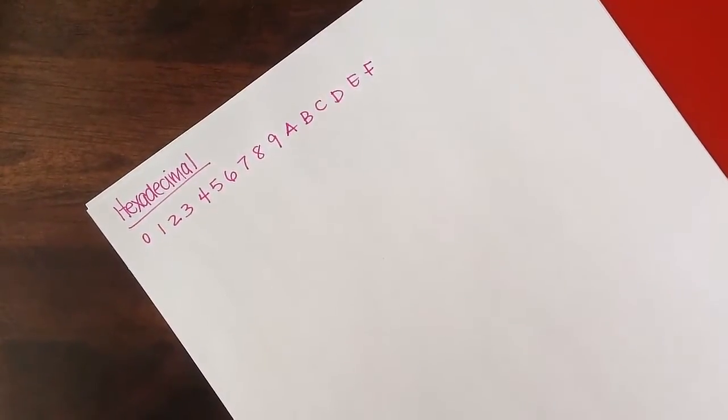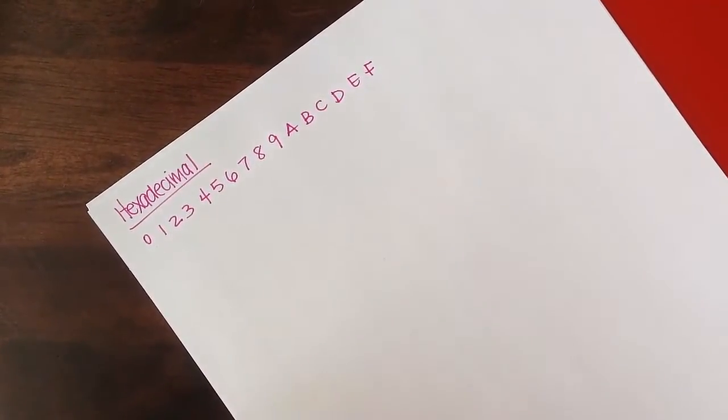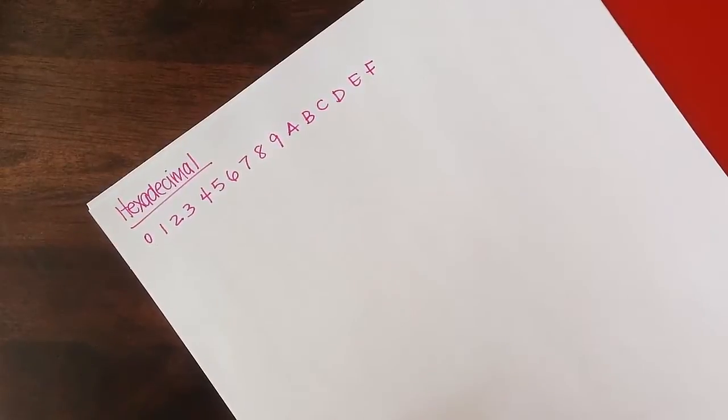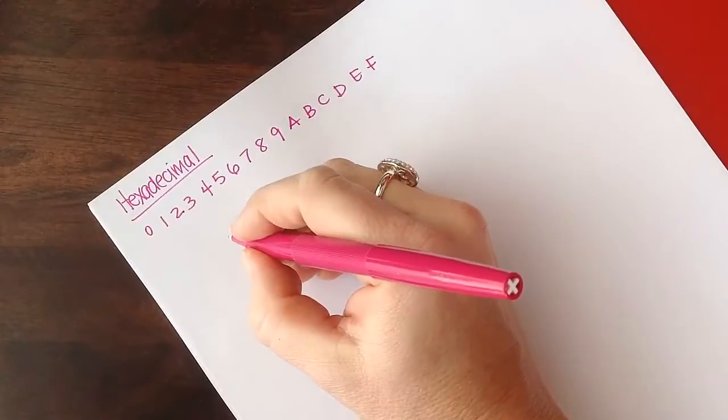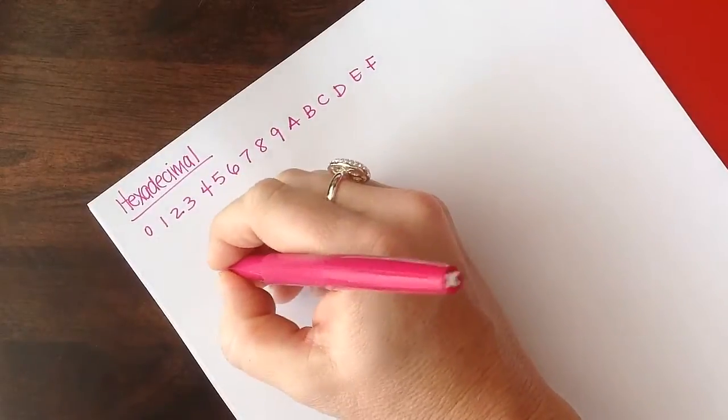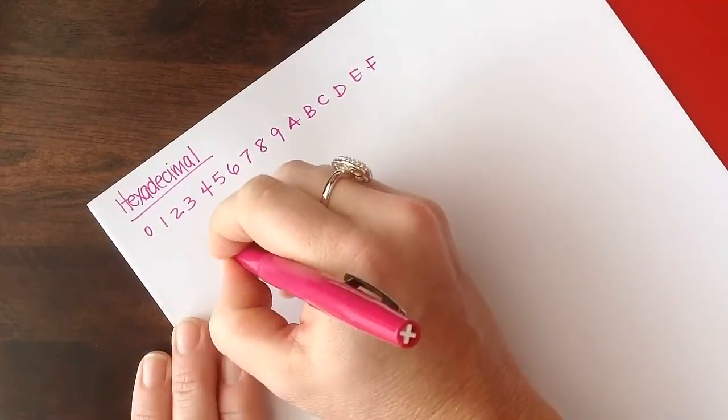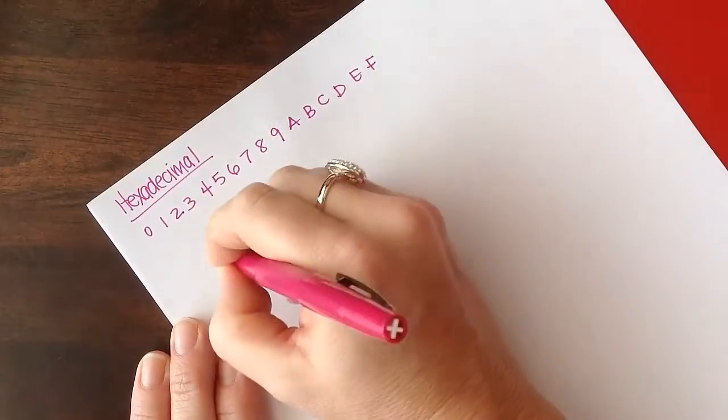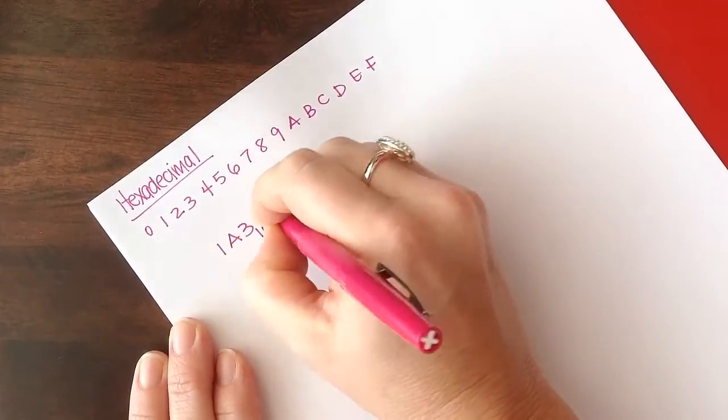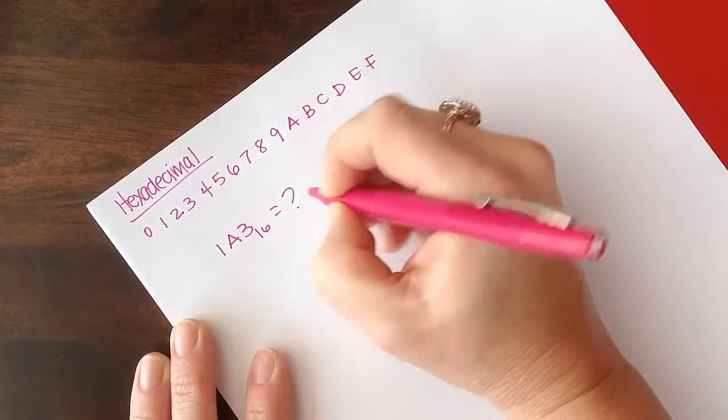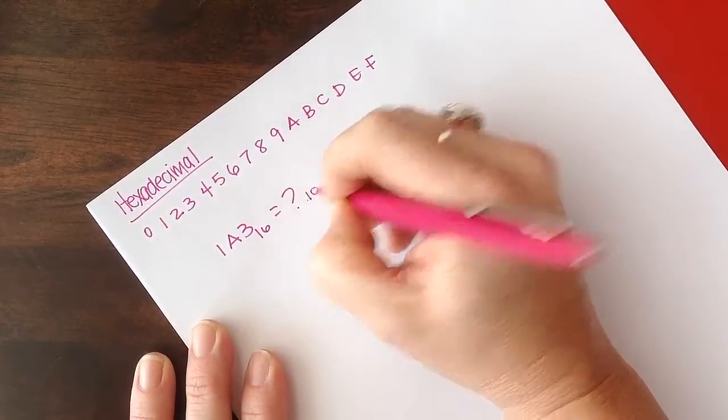Now I'd like to take a hexadecimal number and change it to a decimal number. And here's the way we do that. Let's say we have the number 1A3, base 16, and we want to know what is that equal to in base 10.